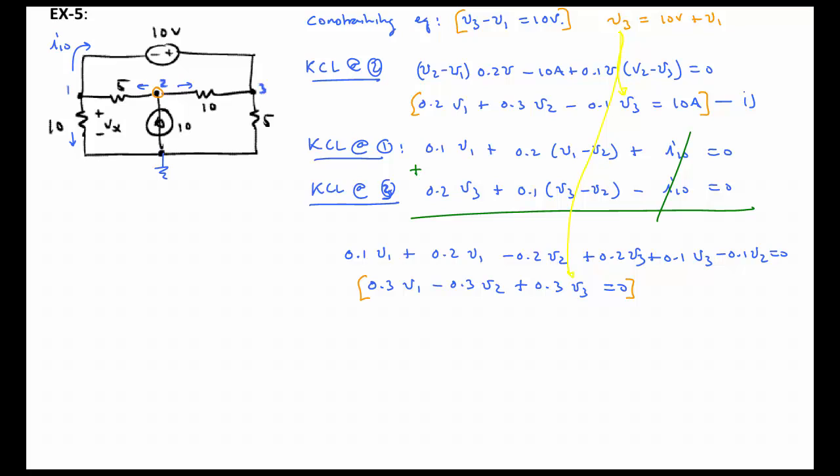So, let's go ahead and do that. We'll take the first equation here and the second equation. After substituting in 10 volts plus V1 for V3 and rearranging that, we find that the first KCL equation at node 2 results in this equation here, 0.1 V1 plus 0.3 V2 is equal to 11 amps.